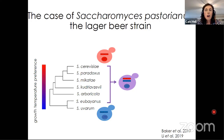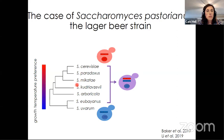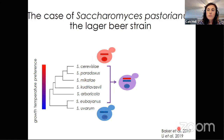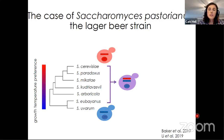The contributions to the hybrid from the cold-tolerant parent eubayanus included a cellular organelle called the mitochondria, which is typically responsible for producing energy for the cell. Researchers determined that the contribution of the mitochondria, along with other components found in the eubayanus genome, actually helped confer the ability to grow at cold temperatures in this hybrid. Whereas the cerevisiae parent donated part of its genome to the hybrid, which helps the hybrid break down the complex sugar maltotriose, which eubayanus cannot naturally do. So in this case, the hybrid brings beneficial traits together from both species.